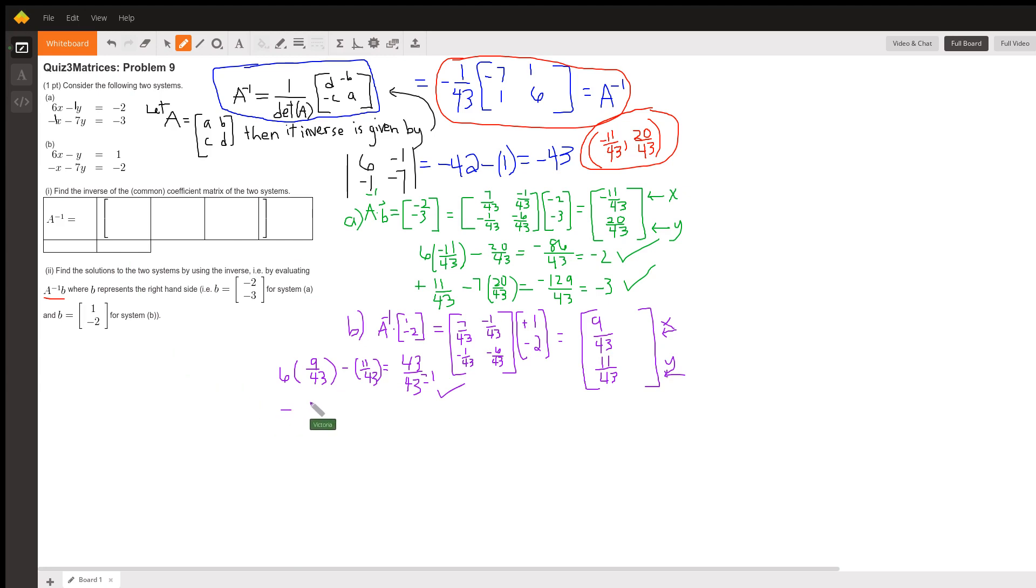Let's try it in the bottom equation. Negative of our new x is negative 9 over 43, minus 7 times our new y, which is 11 over 43. This is negative 9 minus 77 is minus 86 over 43, which equals negative 2. And that's exactly what we were supposed to get.